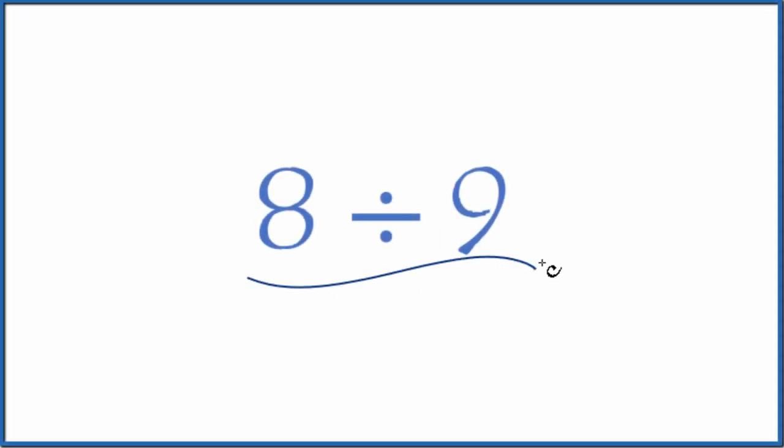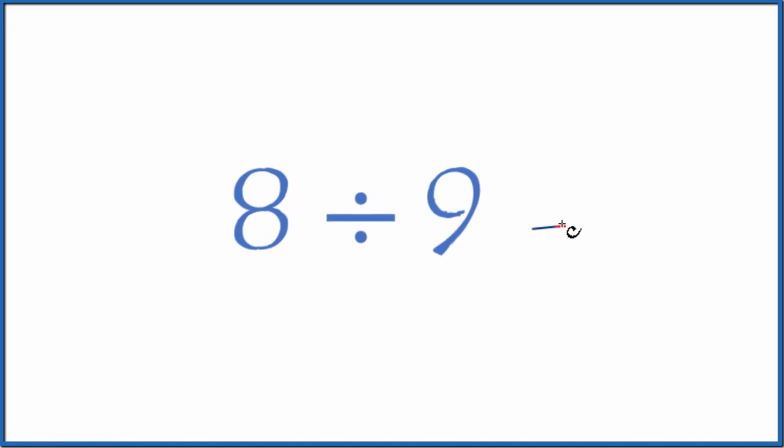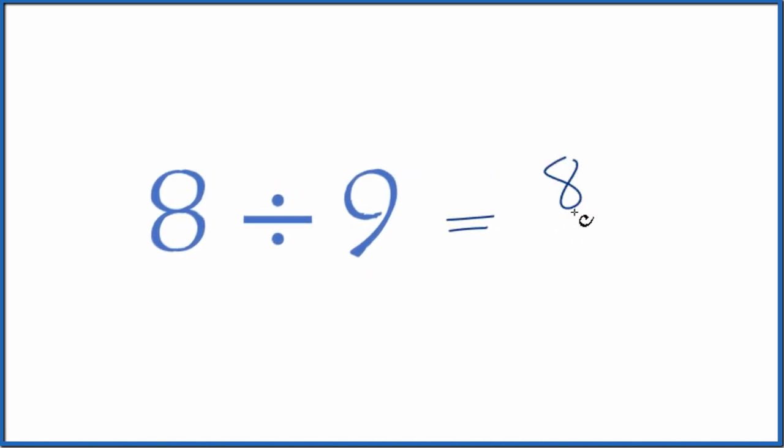If you're asked to divide 8 by 9, here's how you could do it. Let's look at this as a fraction first. Because we have 8 divided by 9, that's the same thing as 8 ninths. So that's a fraction.